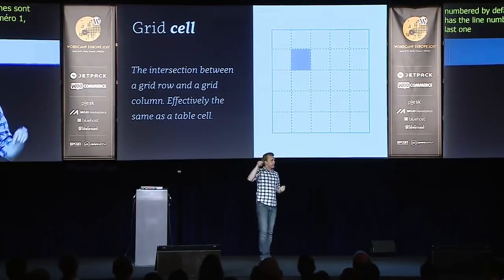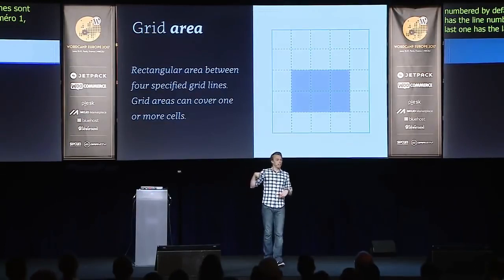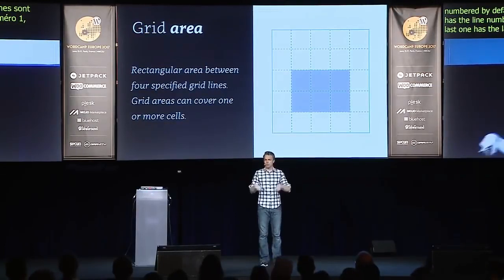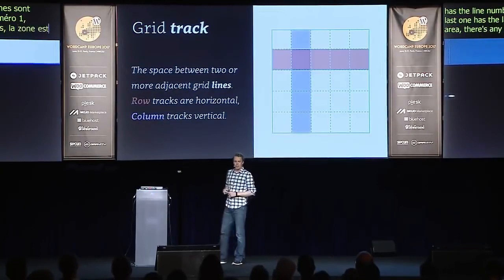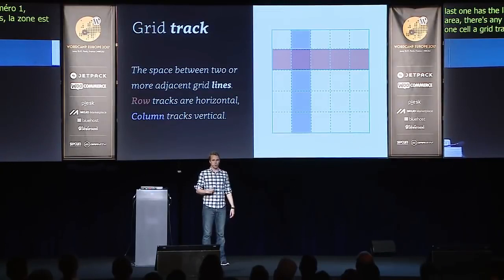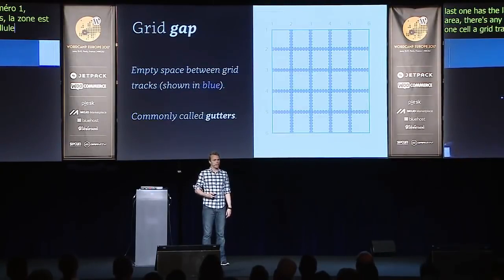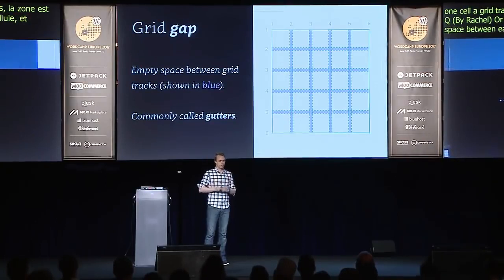A grid cell is any cell inside the grid. A grid area is any defined rectangular area inside the grid that covers more than one cell. A grid track is either a horizontal or vertical track — so a row or a column. And a grid gap is the space between each of the cells, basically gutters, if you choose to add them.